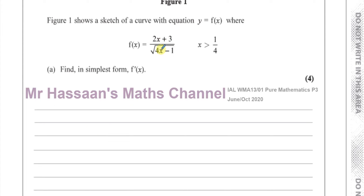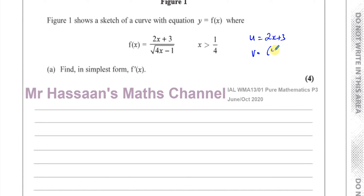When you have a quotient of two separate functions, you have to use the quotient rule, which is quoted for you in the formula book. There is also a nice simple way of remembering it. You call one of them u and the other one v. The numerator has to be u and the denominator has to be v. So u equals 2x plus 3, and v equals 4x minus 1 to the power of a half.